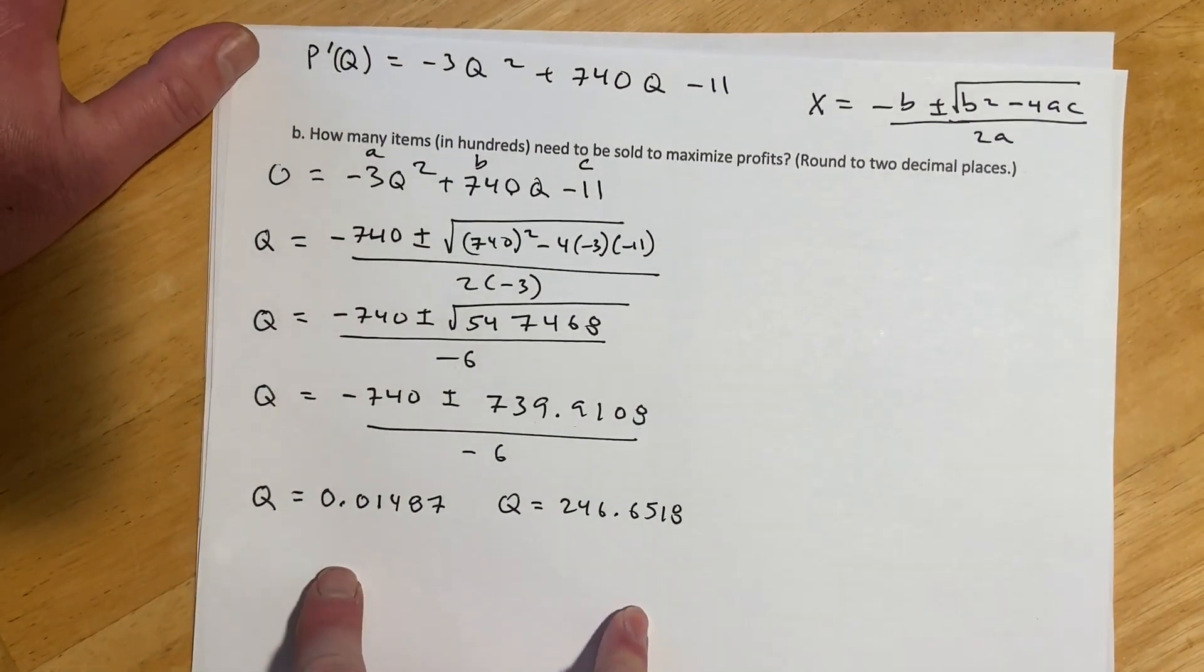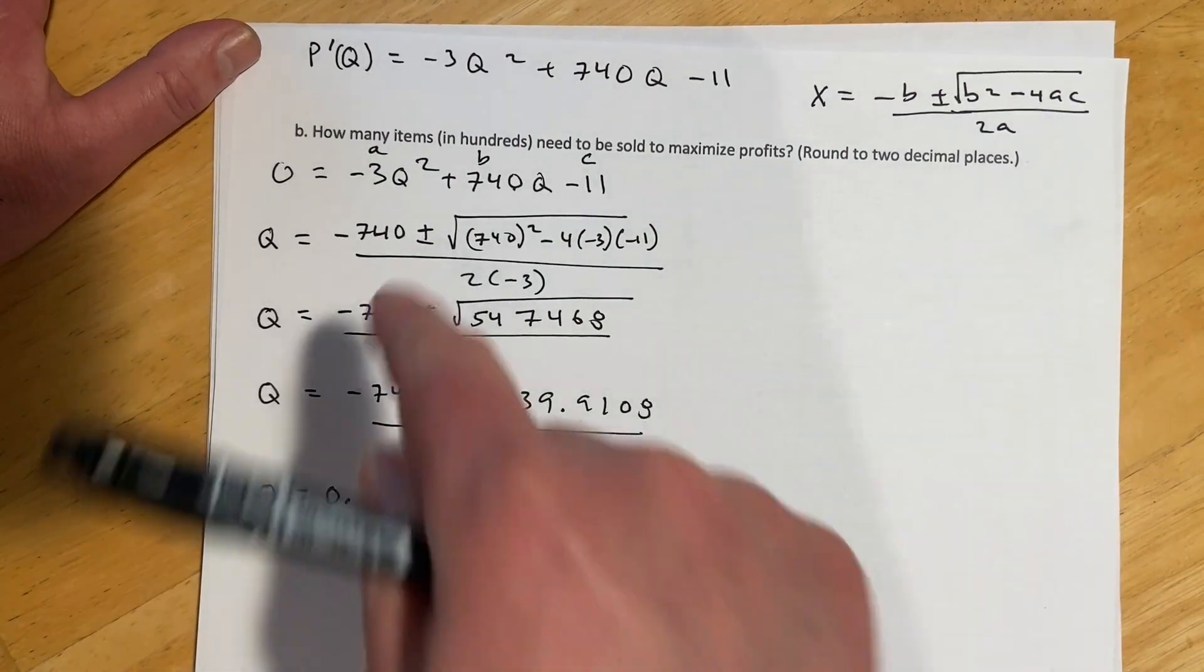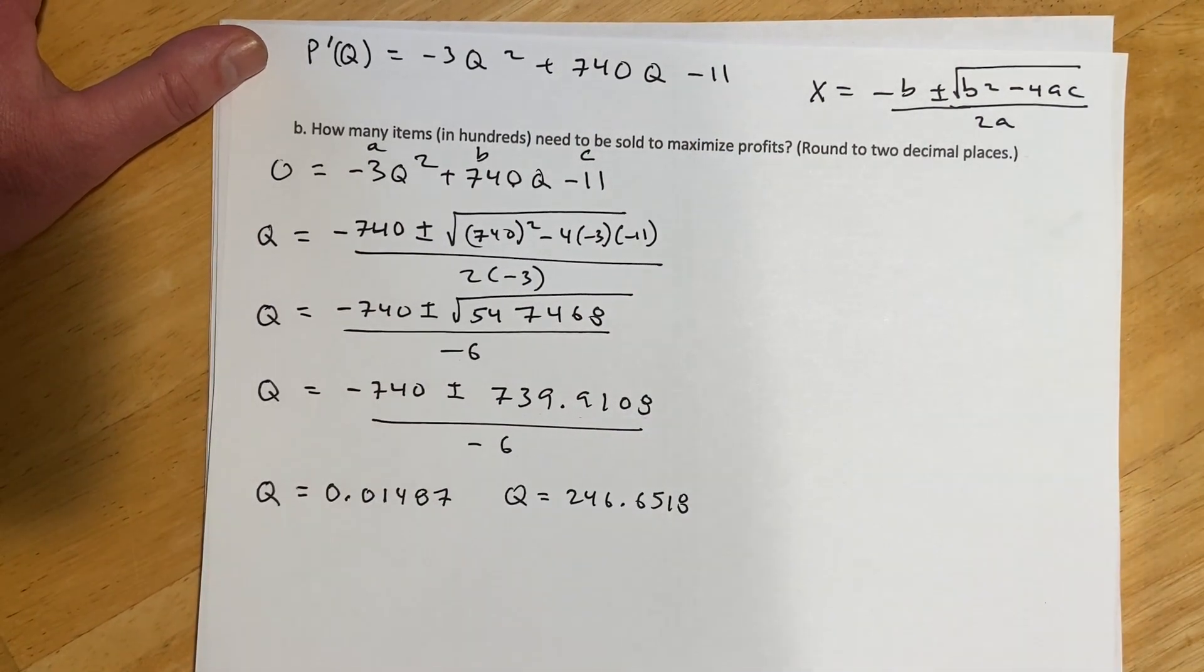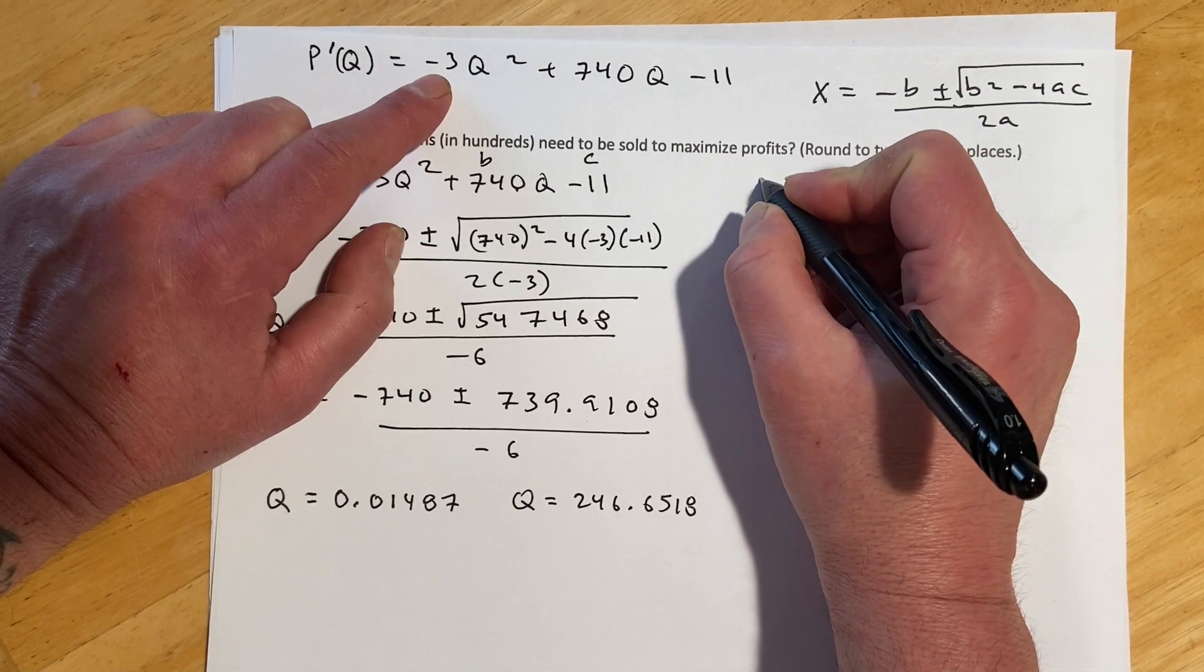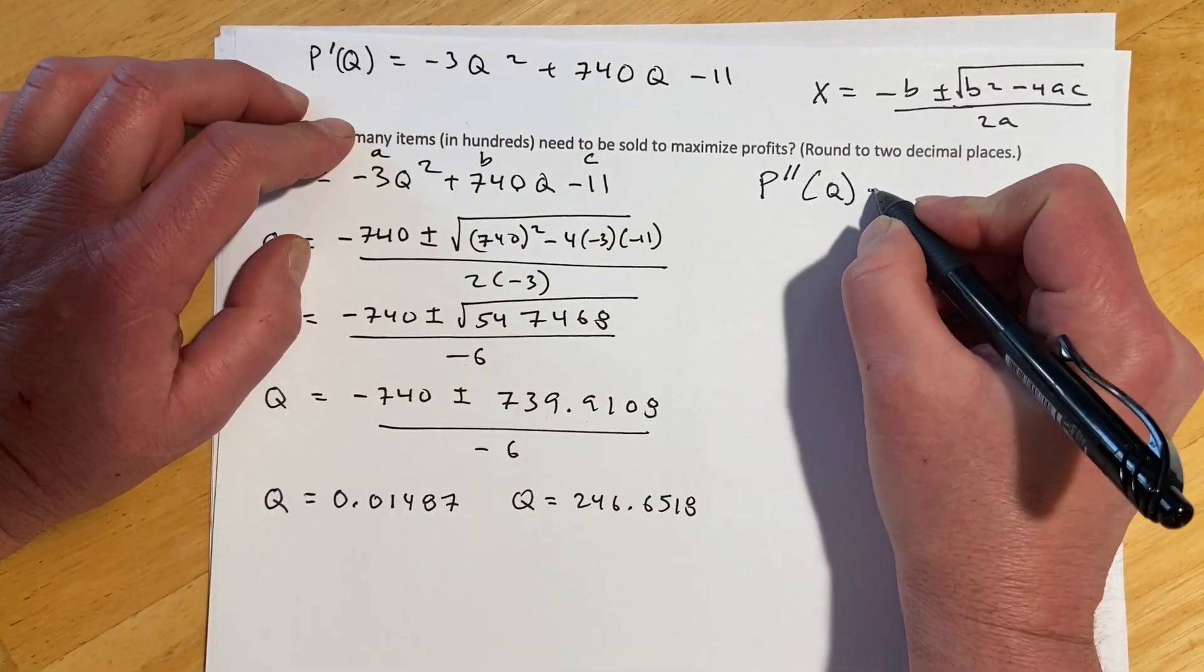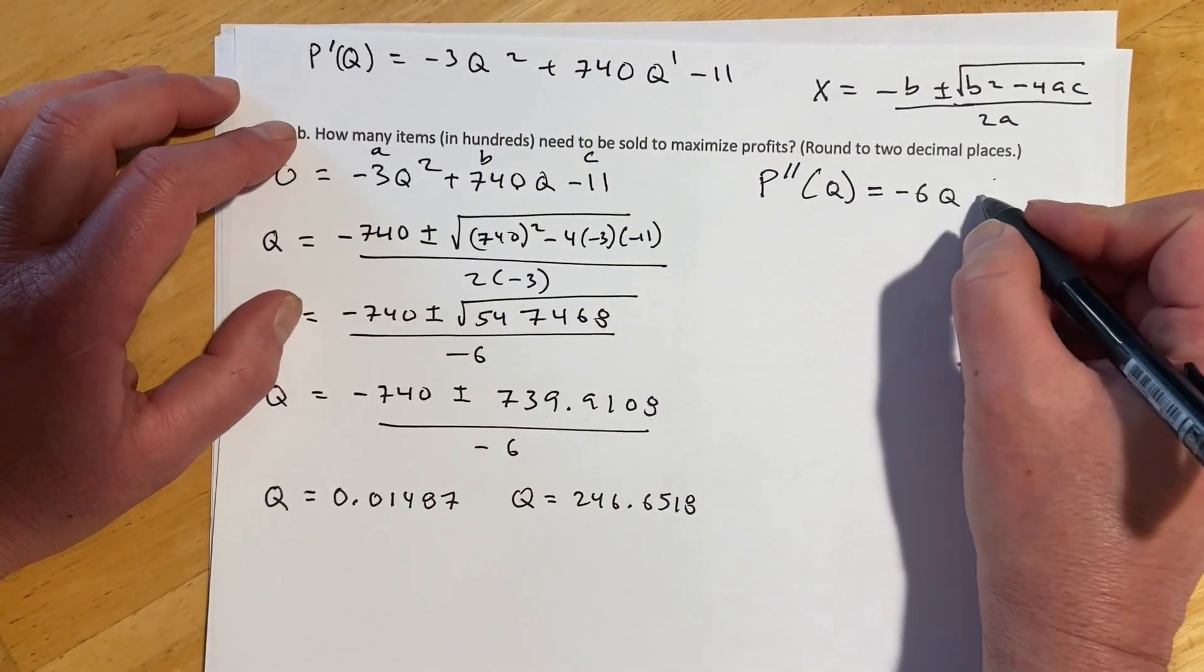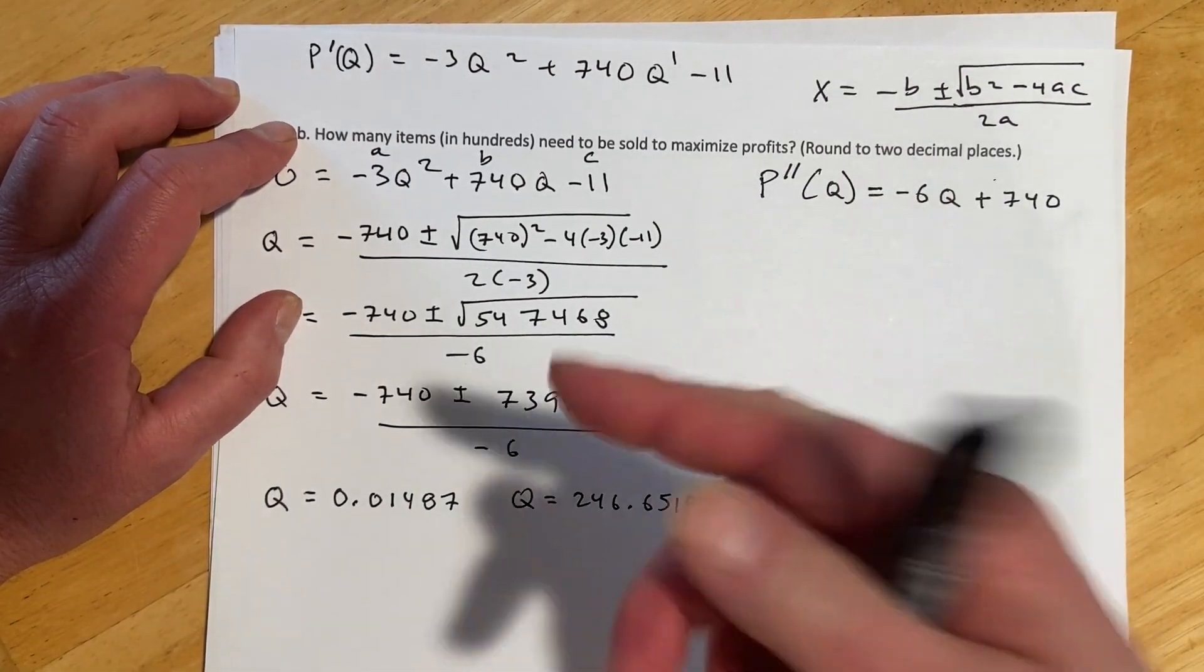So what we have found is the critical values. So these are the places where we would have a min or a max. But they're profits, so we want to make sure we're actually maximizing them, right, and not minimizing them. So to figure out whether or not we have a min or a max, we'll find the second derivative. So coming back up here, I think it will slip over here with it. We're going to have P double prime of Q is going to be two times that three is going to make negative 6Q, and then one times the 740.